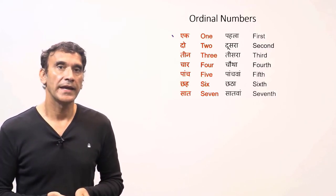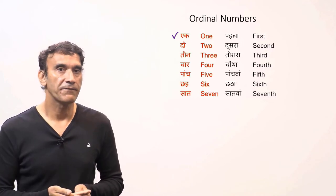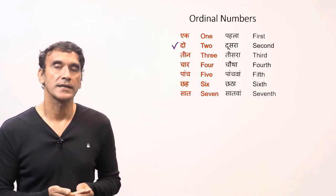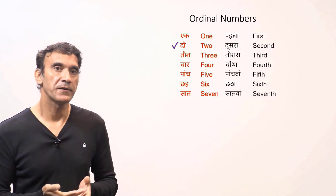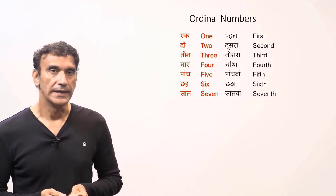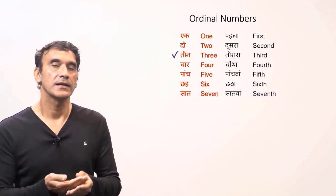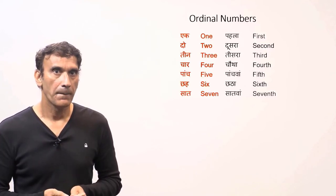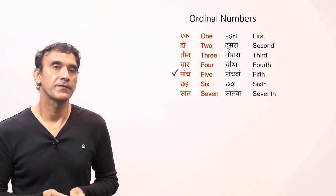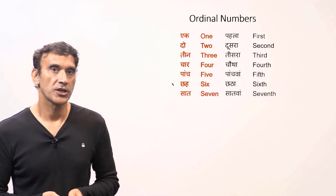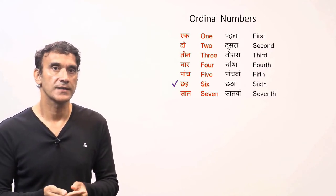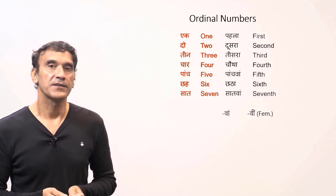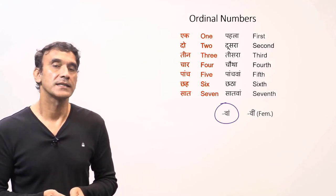Ek (one) — pehla, first; the feminine form is pehli. Do (two) — dusra, second; the feminine form is dusri. Teen (three) — tisra, third. Char (four) — chotha, fourth. Paach (five) — pachwa, fifth. Che (six) — chata, sixth. Sat (seven) — satma, seventh.